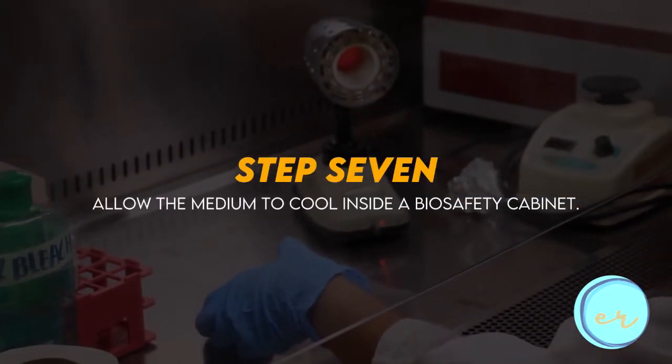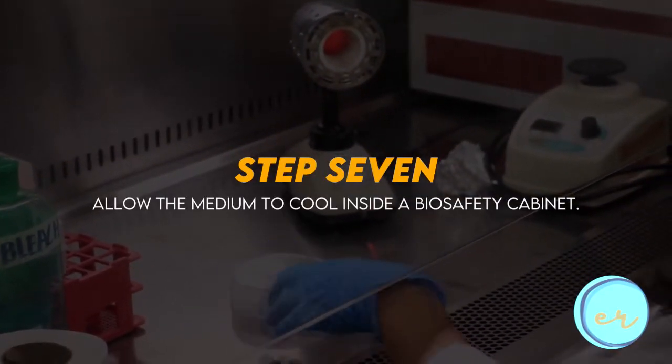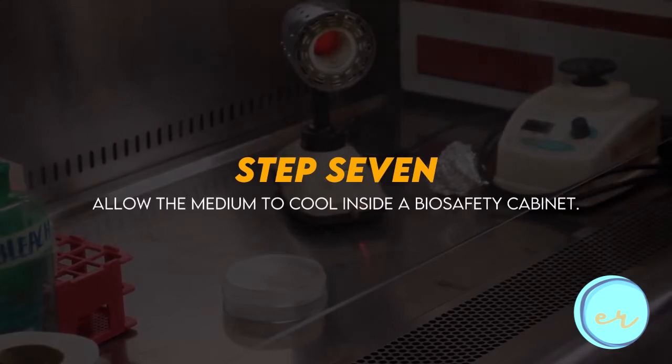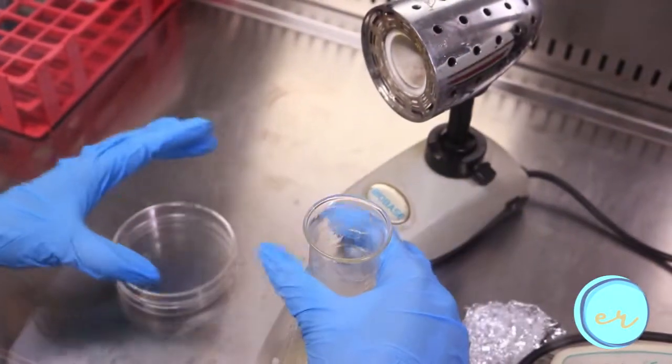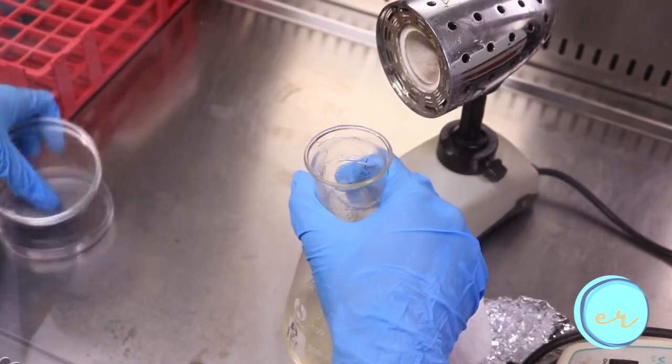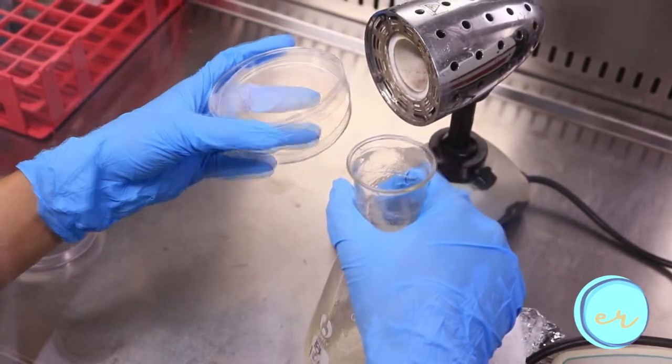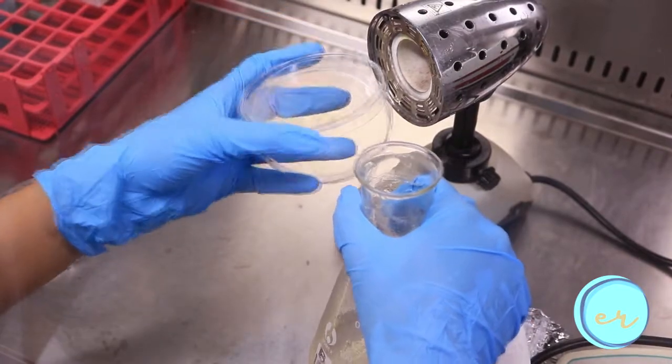After sterilization, make sure to leave media to cool to about 48 to 50 degrees Celsius. This is for you to properly handle the flask and to minimize the amount of steam condensation on the petri plate lids after the agar has been poured.